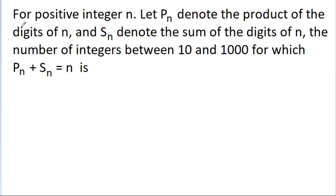In this video, we have given: for positive integer n, let Pn denote the product of the digits of n and Sn denote the sum of the digits of n. The number of integers between 10 and 1000 for which Pn plus Sn is equal to n is to be found.